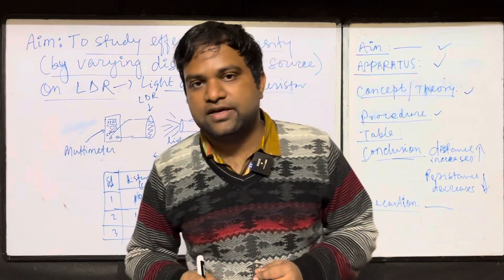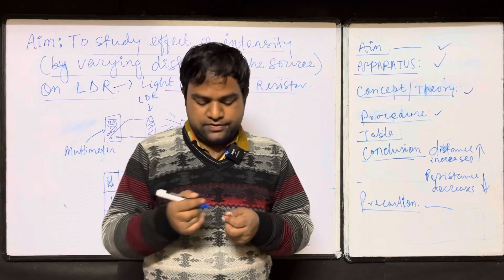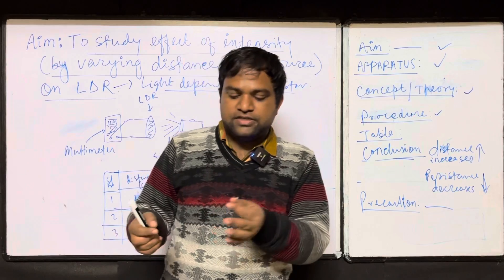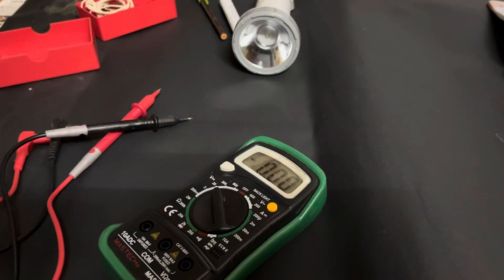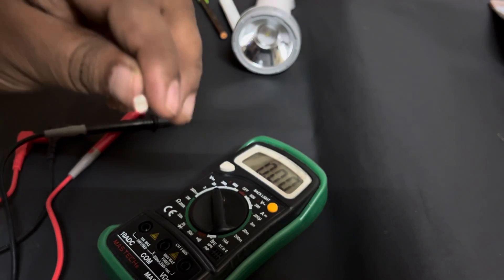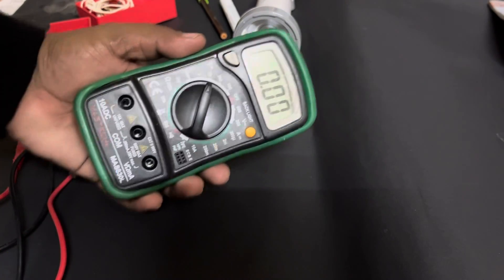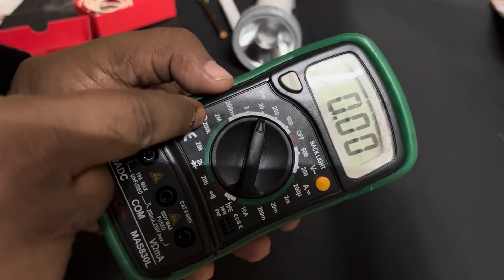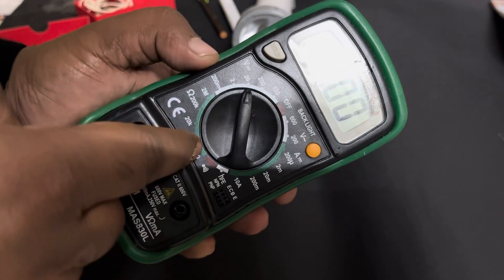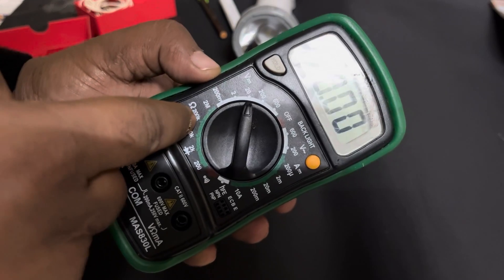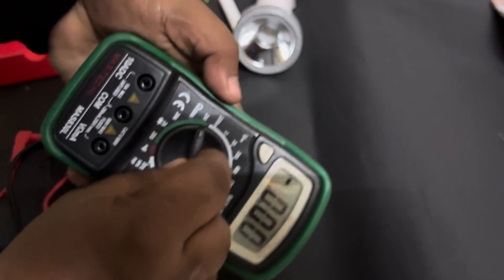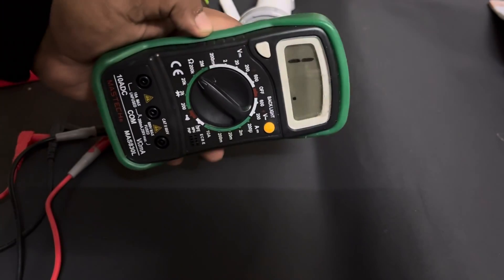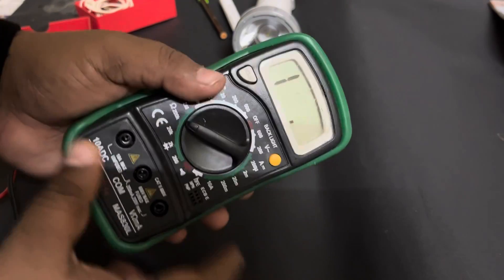This is how you should write the activity. Now let us go to the activity and see how to connect the LDR with a multimeter and take readings. Our apparatus is ready — this is our LDR and we have our multimeter ready. The ohm symbol is shown — the ranges are: 200 ohm, 2 kilo ohm, 20 kilo ohm, 200 kilo ohm, 2 mega ohm. Let us keep it at 200 kilo ohm or 20 kilo ohm — we will see the range and change it if needed.